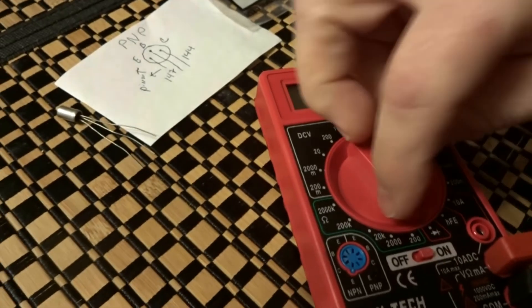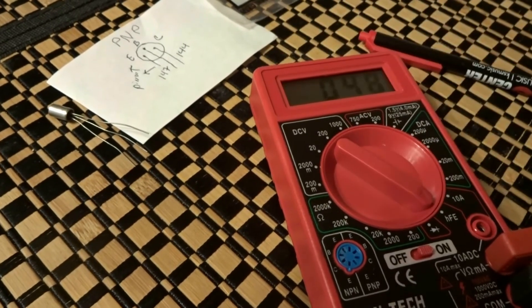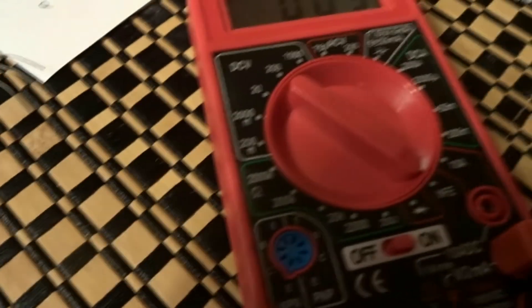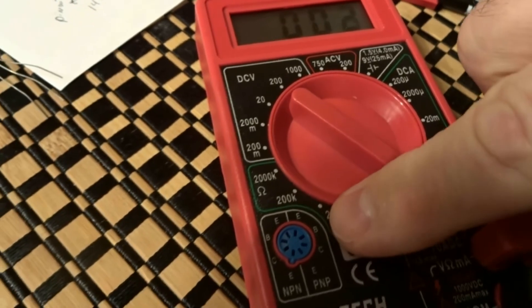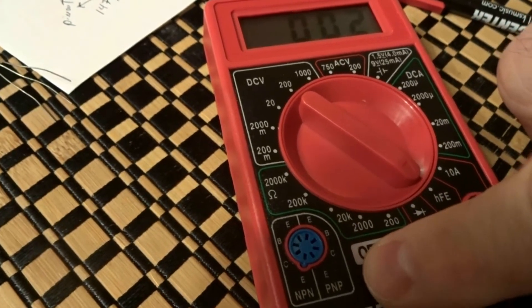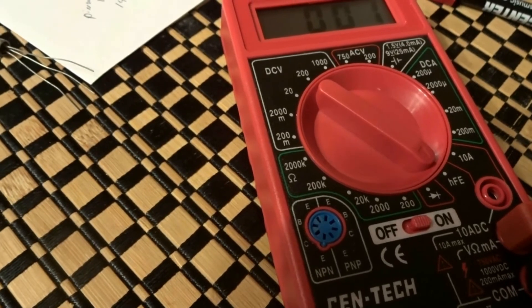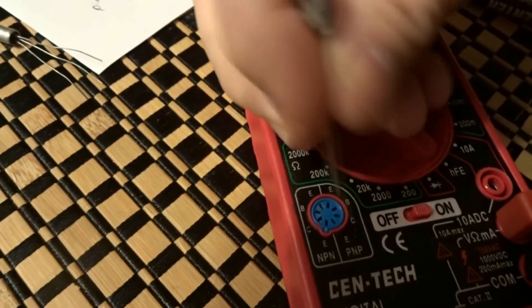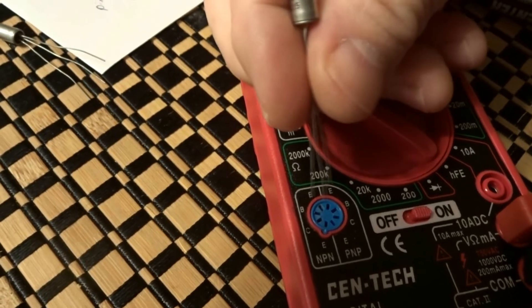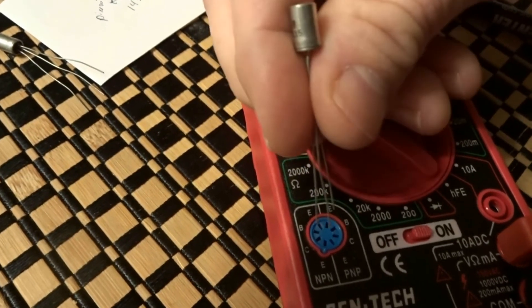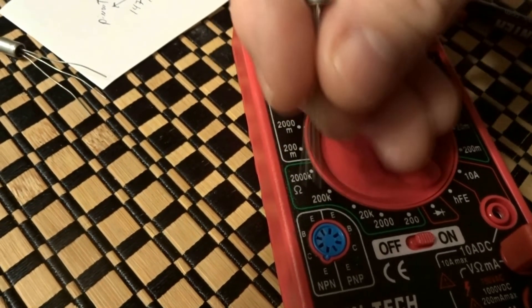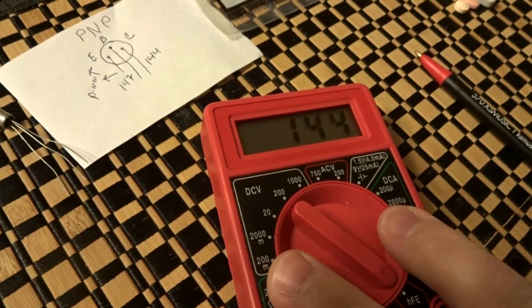Now we're gonna put it on HFE. We're gonna do PNP, as you can see, and we're gonna take the emitter and stick the base, the emitter in the PNP side, the base, and then the collector. So we got that plugged in.